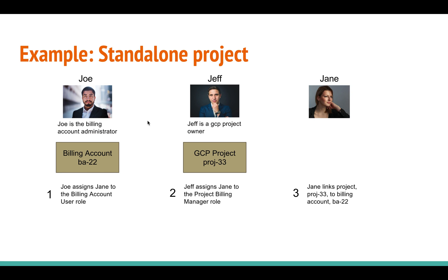The scenario is similar: Joe is the billing account administrator, Jeff owns the GCP project HankNack-02, and there's a third user, Jane, who will be delegated the ability to link Joe's billing account to Jeff's project. There's a three-step process: Joe assigns Jane as a billing account user; Jeff assigns Jane to the project billing manager role on his project; and then Jane goes in and links the project to billing account BA-22. Jane is neither the billing account administrator nor the project owner, but Jeff has delegated her the ability to link that billing account to his project.